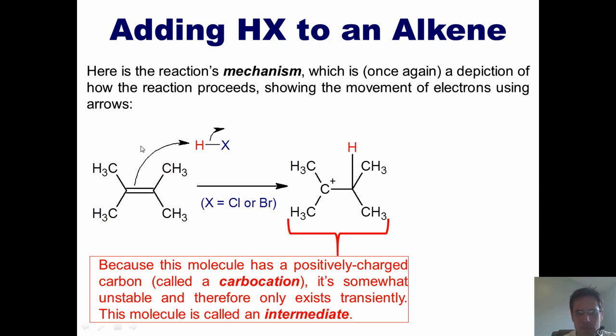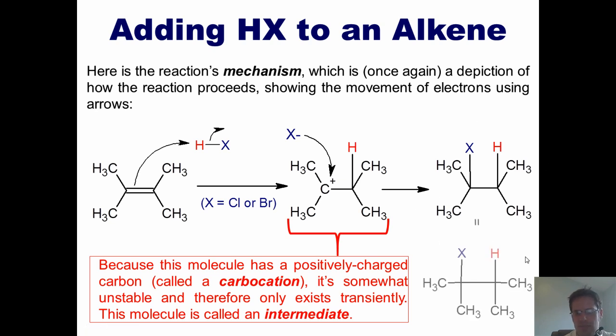Now, you'll notice in this particular exchange that this X atom stole these two electrons and walked away, which means that he becomes an X minus. What does he do now? Well, he takes these two electrons and plugs them right into this hole and forms a bond with this carbocation, which gives us our final product, which can be drawn more simply like this.